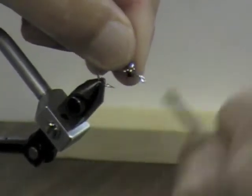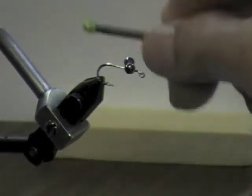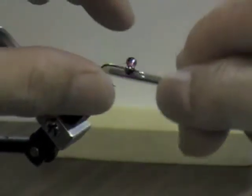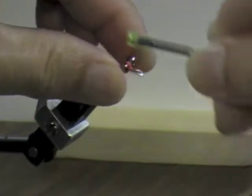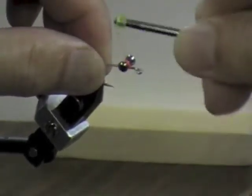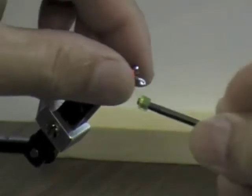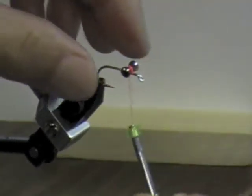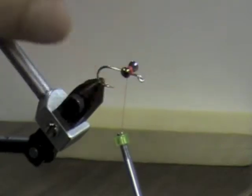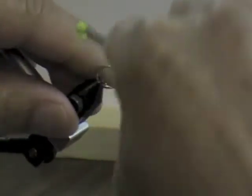The way I tie the dumbbells down is I put seven to eight wraps one direction and go seven to eight wraps the other direction on the barbell eyes until they come up square.